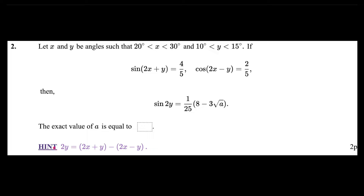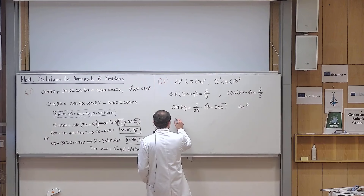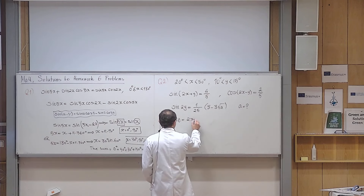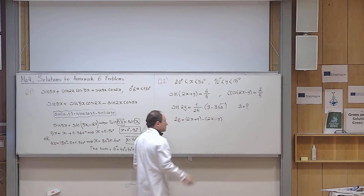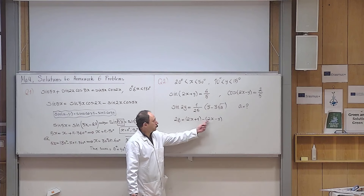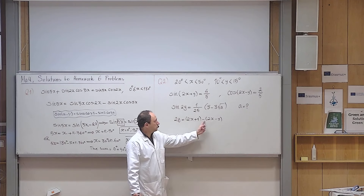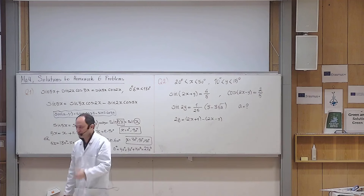I agree — if I didn't provide you this hint, it might not have been easy. The hint is: 2y equals (2x+y) minus (2x−y). This hint is true: if I multiply the minus sign in, minus 2x and 2x are gone, minus minus y is y, plus y is 2y. So that is the truth. Now I have to start using it — but how will it help me solve the problem?